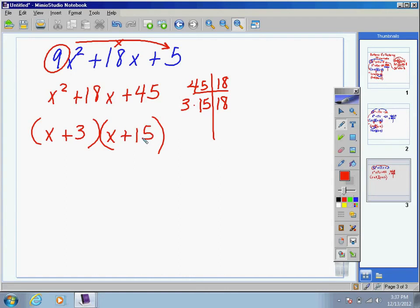Remember, there's one more step left in bottoms up. Since we multiplied by 9 at the beginning, we need to now go back and divide by 9 in our binomials. So take a moment and divide by 9 and reduce your fractions. When you reduce the binomials, you get x plus 1 third and x plus 5 thirds.